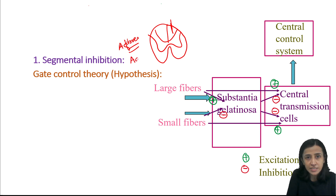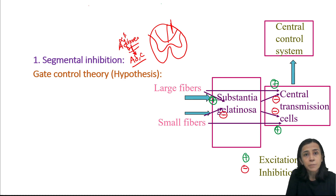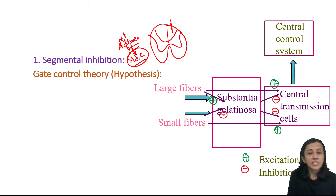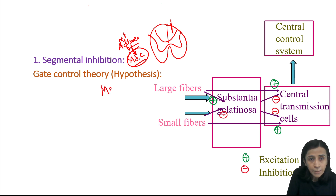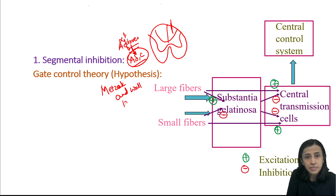Pain fibers are A-delta and C fibers. When A-alpha and A-beta fibers are stimulated, they cause presynaptic inhibition of A-delta and C fibers. For that, one hypothesis was given by Melzack and Wall in 1965, named the gate control theory or gate control hypothesis.